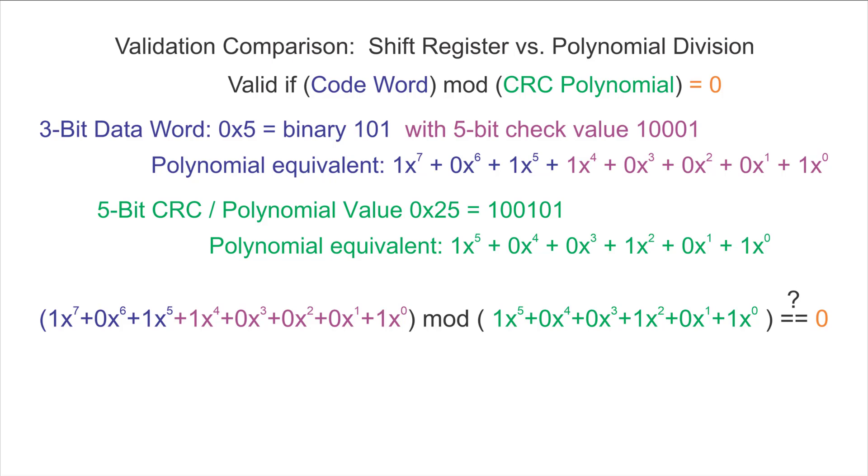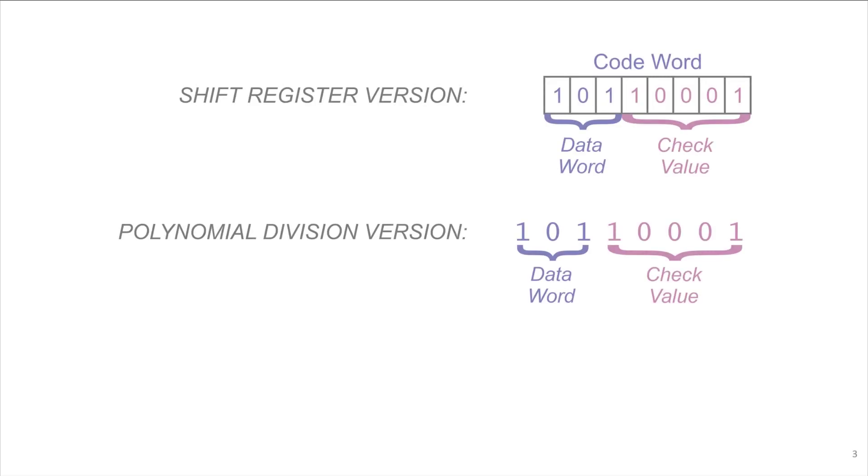But we're not going to use the explicit polynomial notation. We'll just use the coefficients, which are binary coefficients with the value 0 and 1. For this comparison, we'll put the shift register version at the top and the polynomial division version at the bottom. They both start out with the same codeword with the check value and data value as indicated.